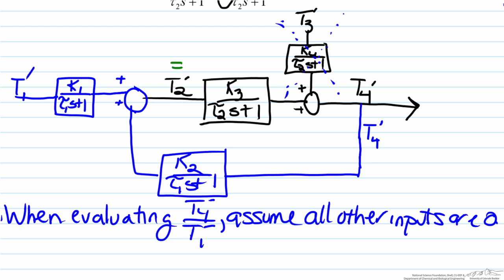So in other words this is T1 prime multiplied by k1 over tau1s plus 1 plus T4 prime over k2 over tau1s plus 1. To continue going through the diagram it passes through a block, so therefore this k3 over tau2s plus 1 is multiplied by both terms. The summation is no longer necessary because since T3 prime is zero,